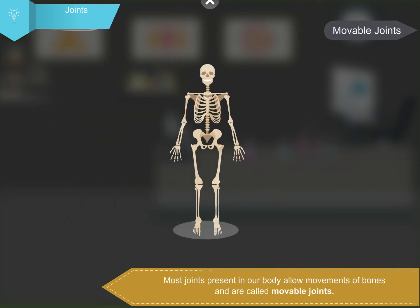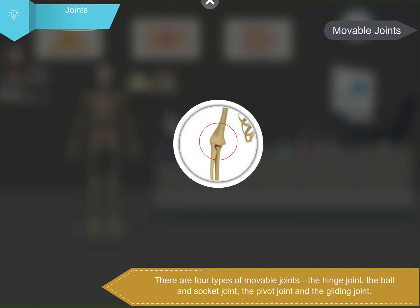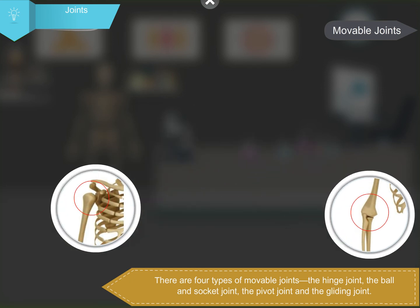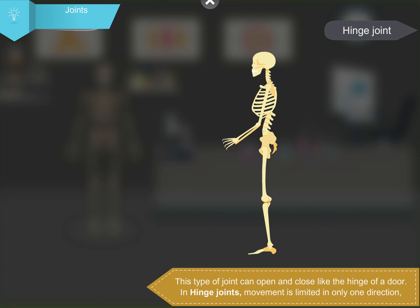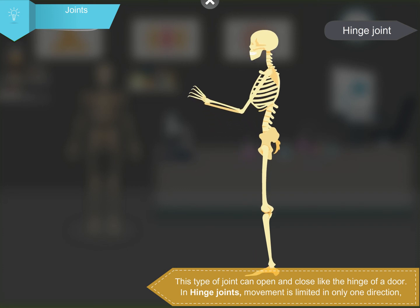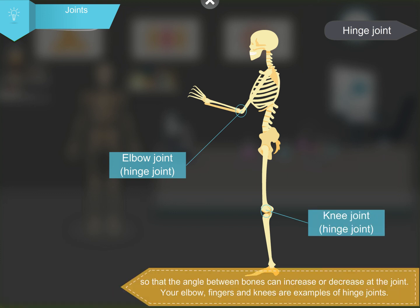Most joints present in our body allow movements of bones and are called movable joints. Movable joints have cartilage between them to prevent the bones at a joint from rubbing against each other. There are four types of movable joints: the hinge joint, the ball and socket joint, the pivot joint, and the gliding joint. The hinge joint can open and close like the hinge of a door. Movement is limited in only one direction, so the angle between bones can increase or decrease. Your elbow, fingers and knees are examples of hinge joints.